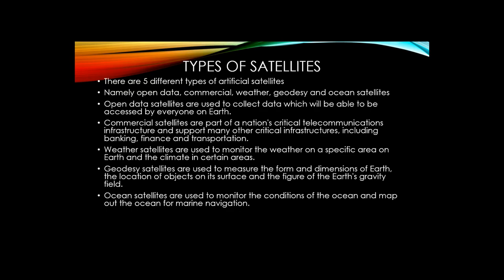Open data satellites are used to collect data which will be accessible by everyone on Earth for free. Commercial satellites are part of a nation's critical telecommunications infrastructure and support many other critical infrastructures including banking, finance, and transportation. Weather satellites are used to monitor the weather in specific areas. Geodesy satellites are used to measure the form and dimensions of Earth, the location of objects on its surface, and the figure of Earth's gravity field. Finally, ocean satellites are used to monitor the conditions of the ocean and map out the ocean for marine navigation.